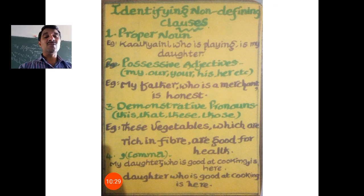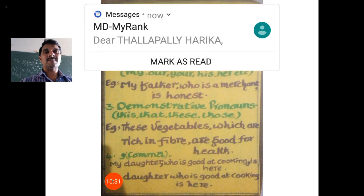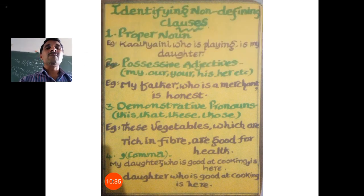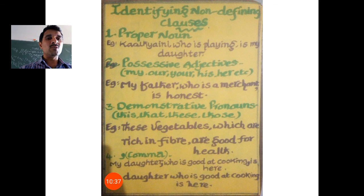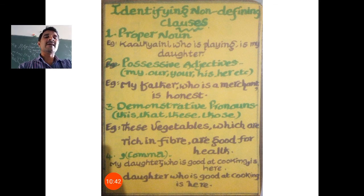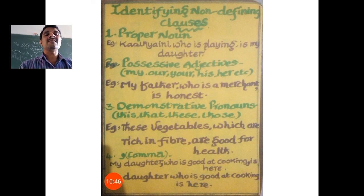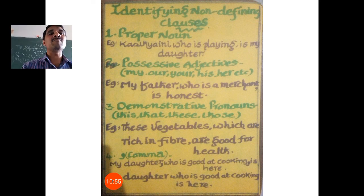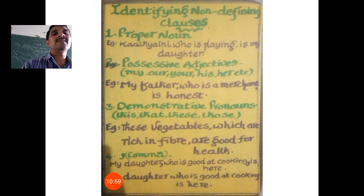Last but not least: the comma. A comma can save a life, dear friends. For example, 'My daughter, who is good at cooking, is here.' 'My daughter' — crystal clear, identity given. 'Who is good at cooking' is redundancy — additional information about my daughter. Remove the relative clause: 'My daughter is here' — that is enough, without 'who is good at cooking.'